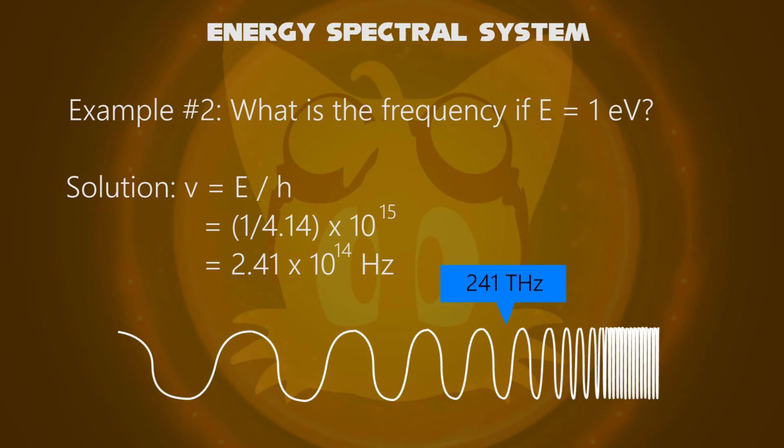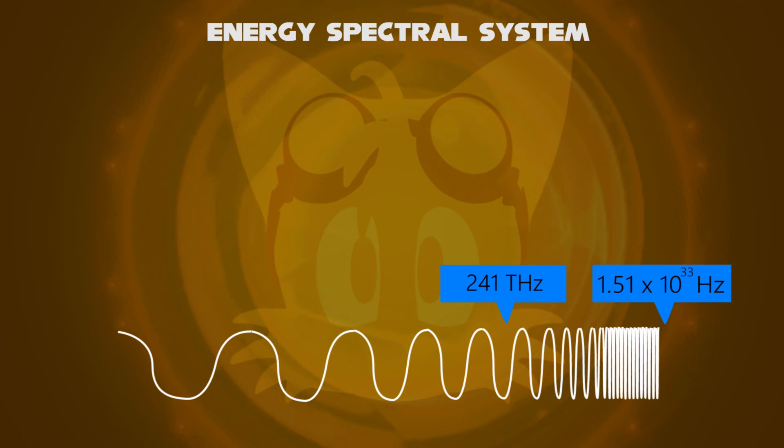You can notice we have obtained a major difference of frequency. 1 joule made the frequency extremely high above the gamma ray levels, and 1 electron volt made the frequency below the visible spectrum.